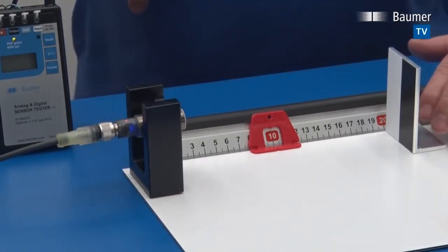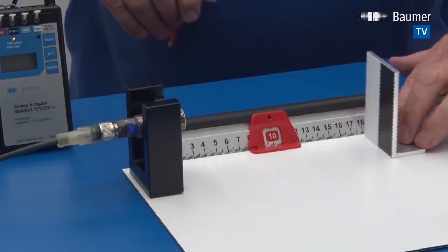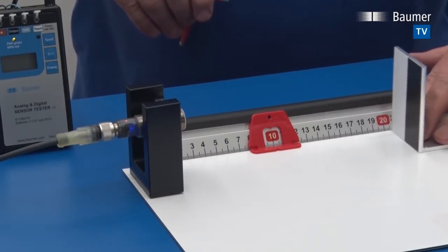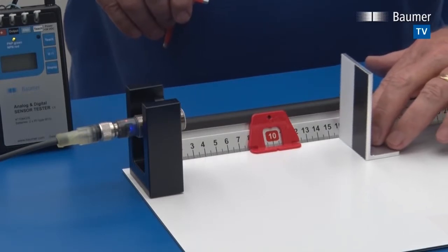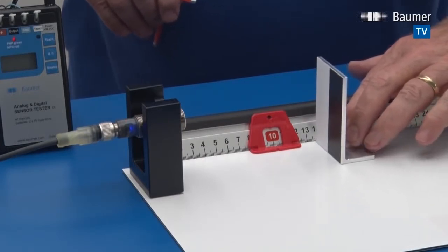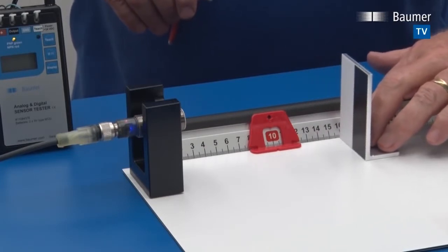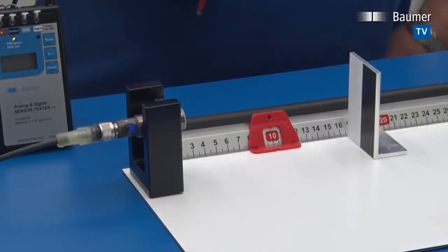And now the sensor has been programmed to detect this target just within a window of 20 centimeters to 15. As soon as you move beyond 20 further away it's off. As soon as you move closer than 15 it's off too. So the sensor just detects the object within that window that has been set by qteach.